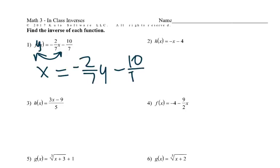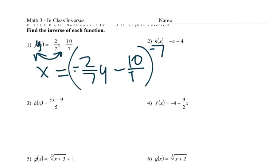Then we're going to solve for y. With this one, first thing I look at — two 7s on the bottom — I'm going to times by 7 first. And actually we have a negative right there, let's times by negative 7 to make it easy on ourselves.